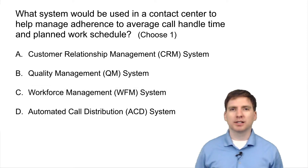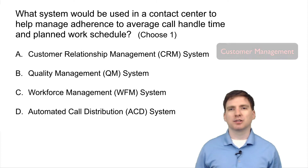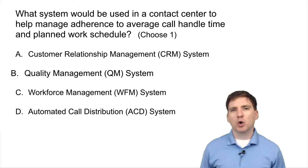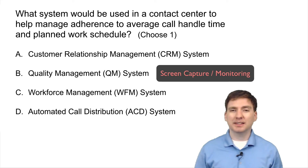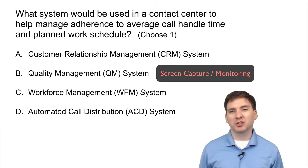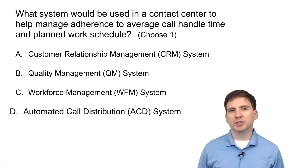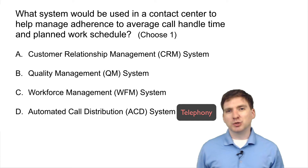Now let's look at the incorrect answer choices. Customer relationship management system is the role Salesforce plays in the contact center, so hopefully you were able to rule that one out. B: Quality management system is the system used to record the agent interactions with customers, often including capturing video of the workstation screens. It usually includes the ability to review particular customer interactions while filling out a checklist or survey form grading how well the agent did.